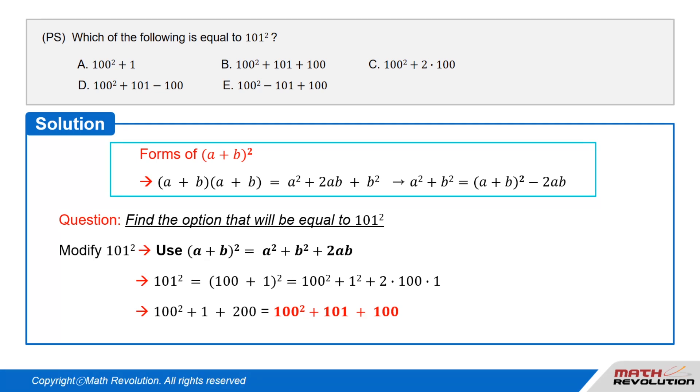Let's modify 101 squared using the formula (a + b)² = a² + b² + 2ab.